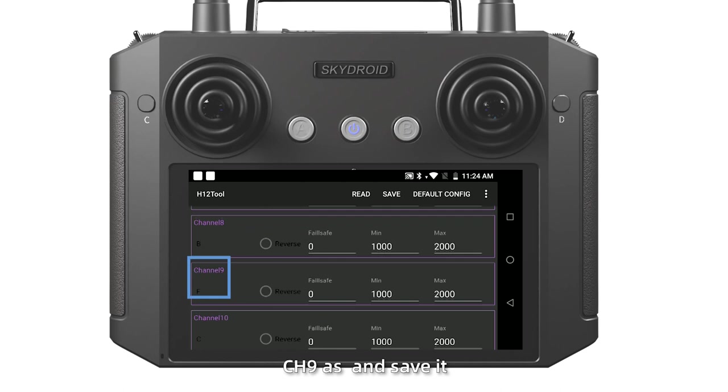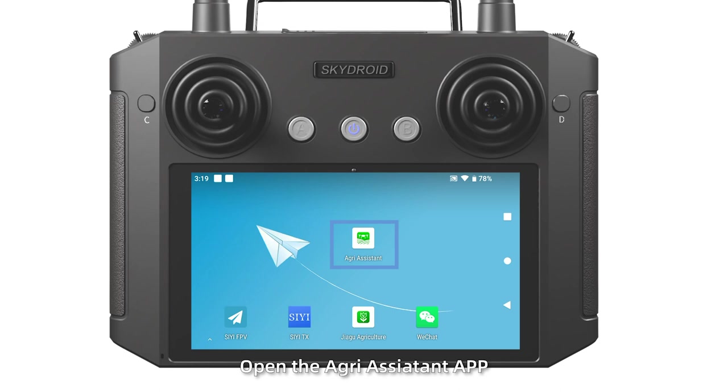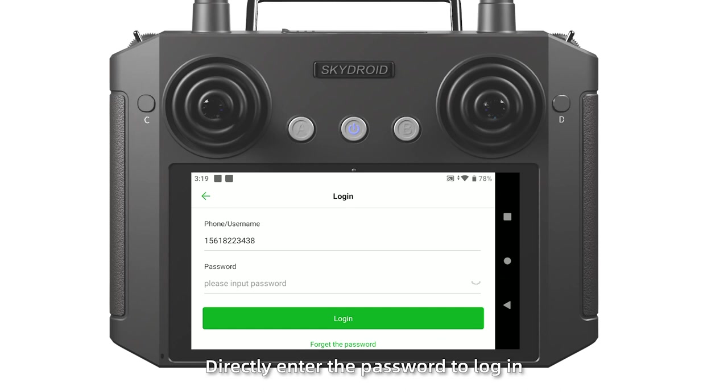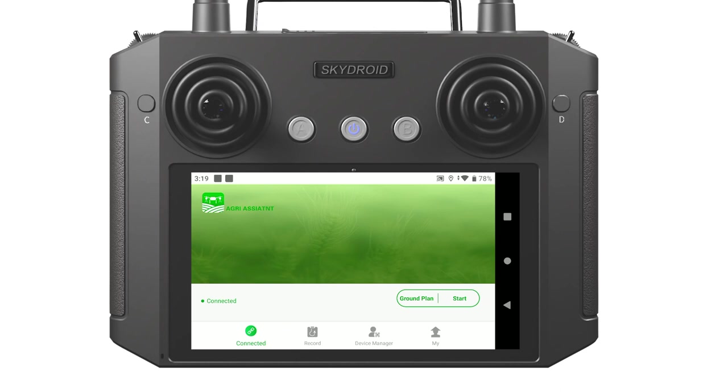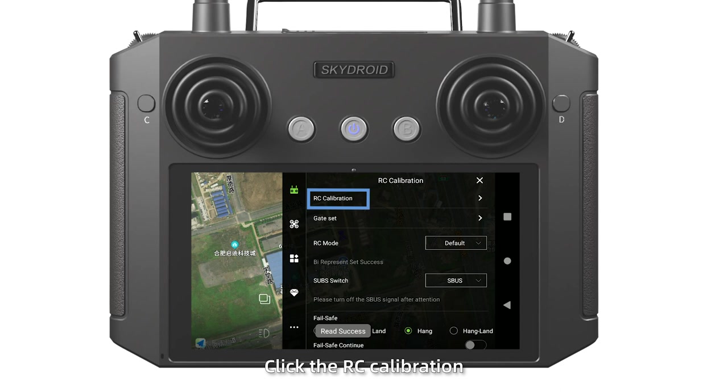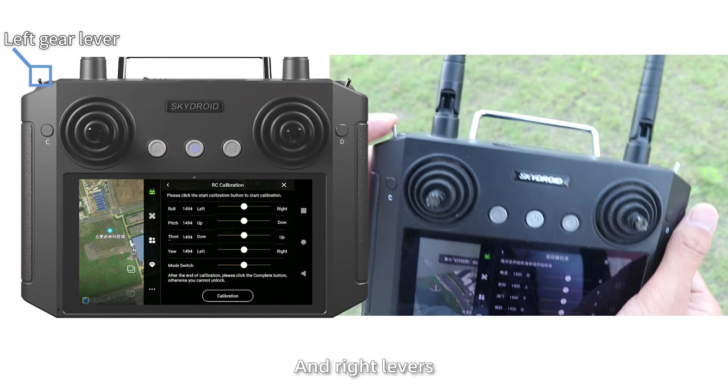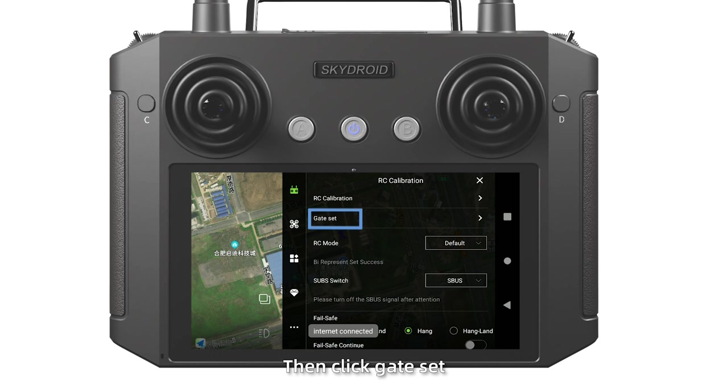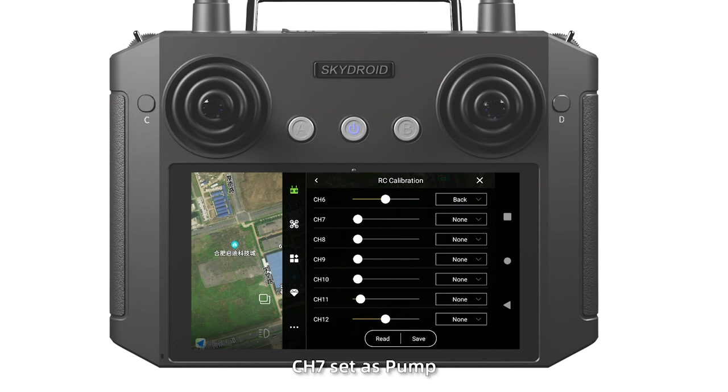Step 4: Open the Angry Assistant app. Register an account. If already have, directly enter the password to log in. After connected, select H12, click the start, then click the menu in the upper right corner. Click the RC calibration and calibrate the up, down, left and right levers to confirm the joysticks can be used normally. Then click gate set. The channels can be customized. CH6 set as Bank, CH7 set as Pump, CH8 set as Engine, CH9 set as AB. Then save it. And RC mode set as Model 1 and save it.